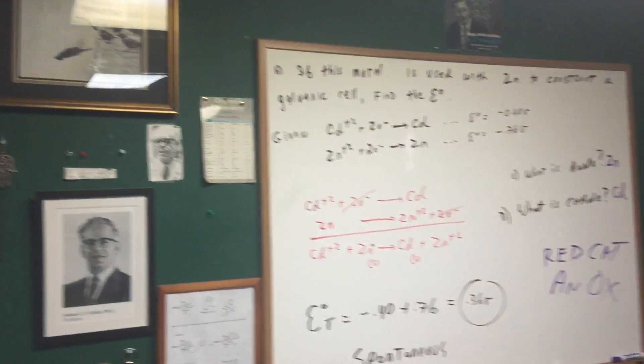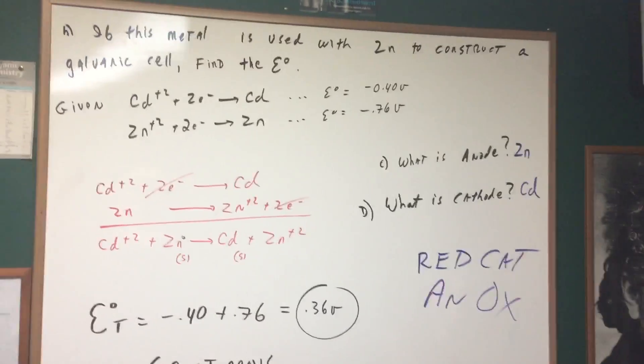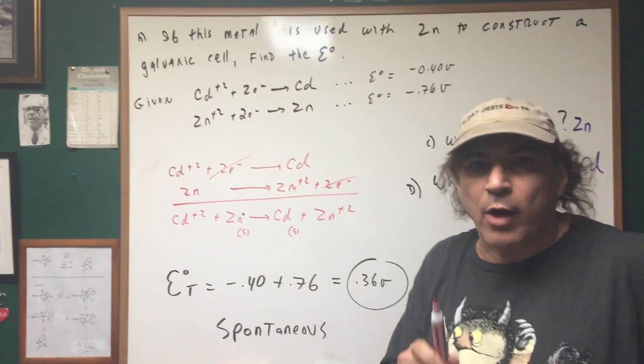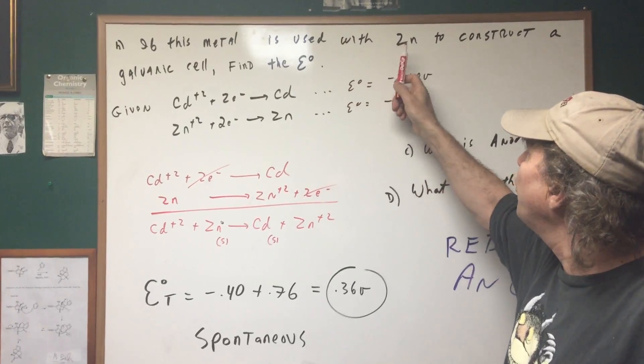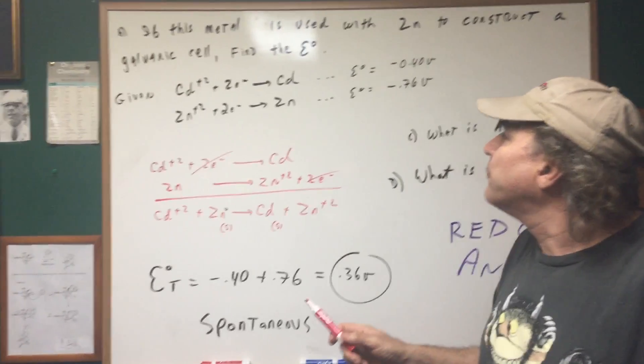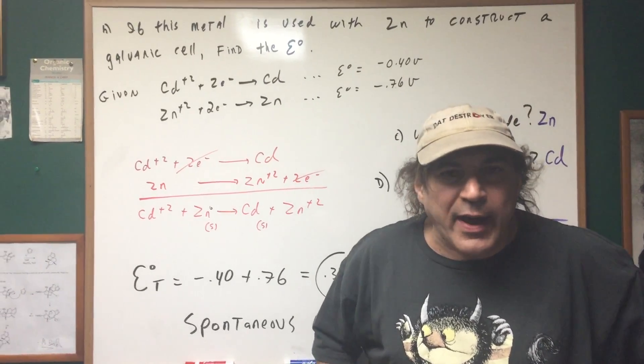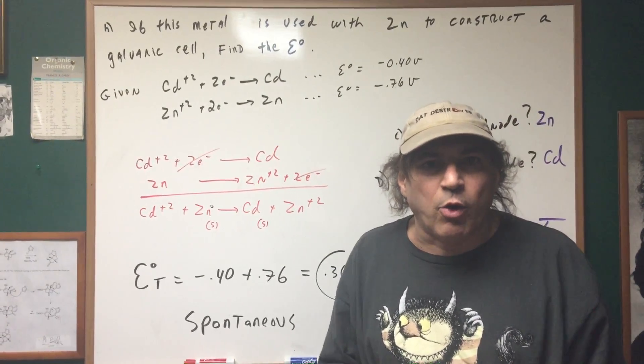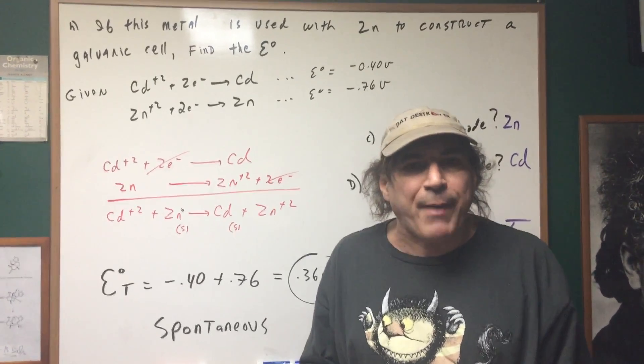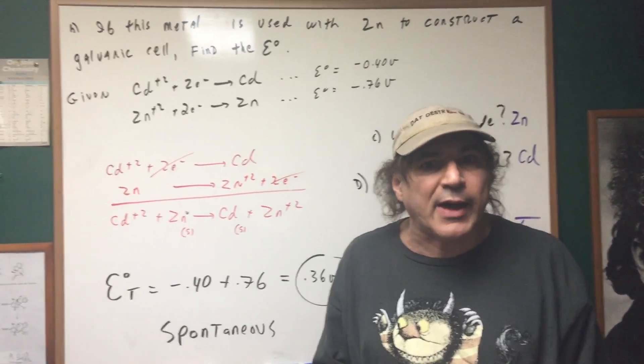Now let's go to the other point and let's do the rest of this problem. Now I start hitting a little harder. It says if this metal which we now know as cadmium is used with zinc to construct a galvanic cell find the E0. A galvanic cell or a voltaic or an electrochemical cell will have a positive E0. So right off the bat we know the answer has got to be a positive E0.